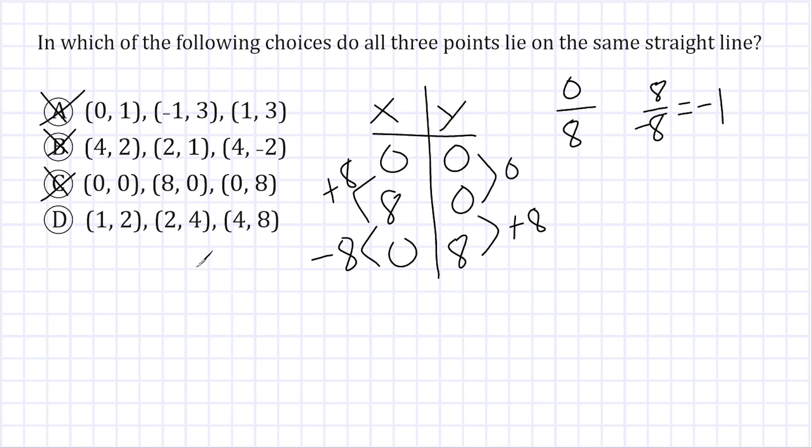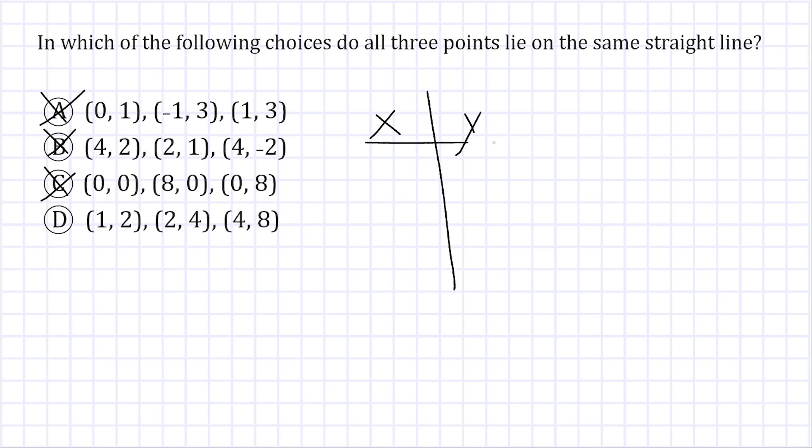But let's go ahead and just confirm this. Alright. So the x values for choice D are 1, 2, and 4. And the corresponding y's are 2, 4, and 8.